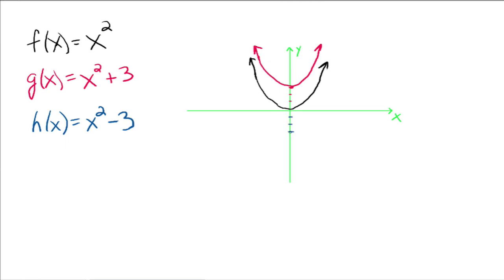So 1, 2, 3. Everything else is the same. It's a parabola. It's the same basic parabola. It's just been moved down 3 units. Okay, does that make sense?